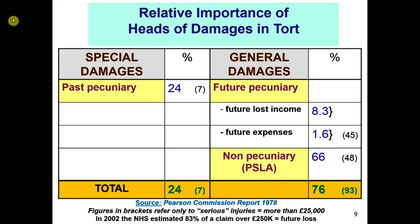You could change the relative importance of these figures if you move to more serious cases. In 1978 they gave the threshold as £25,000 — that's out of date now — but in more serious cases the figures change. You can imagine future loss of earnings growing, future expenses growing too. The overall average for future pecuniary loss was 9.9%, but in serious cases it rises to 45%. Non-pecuniary loss then drops to 48%. So in serious cases you've got a different pattern, but that overall figure is the overall pattern for tort — and it's a tremendously important table.